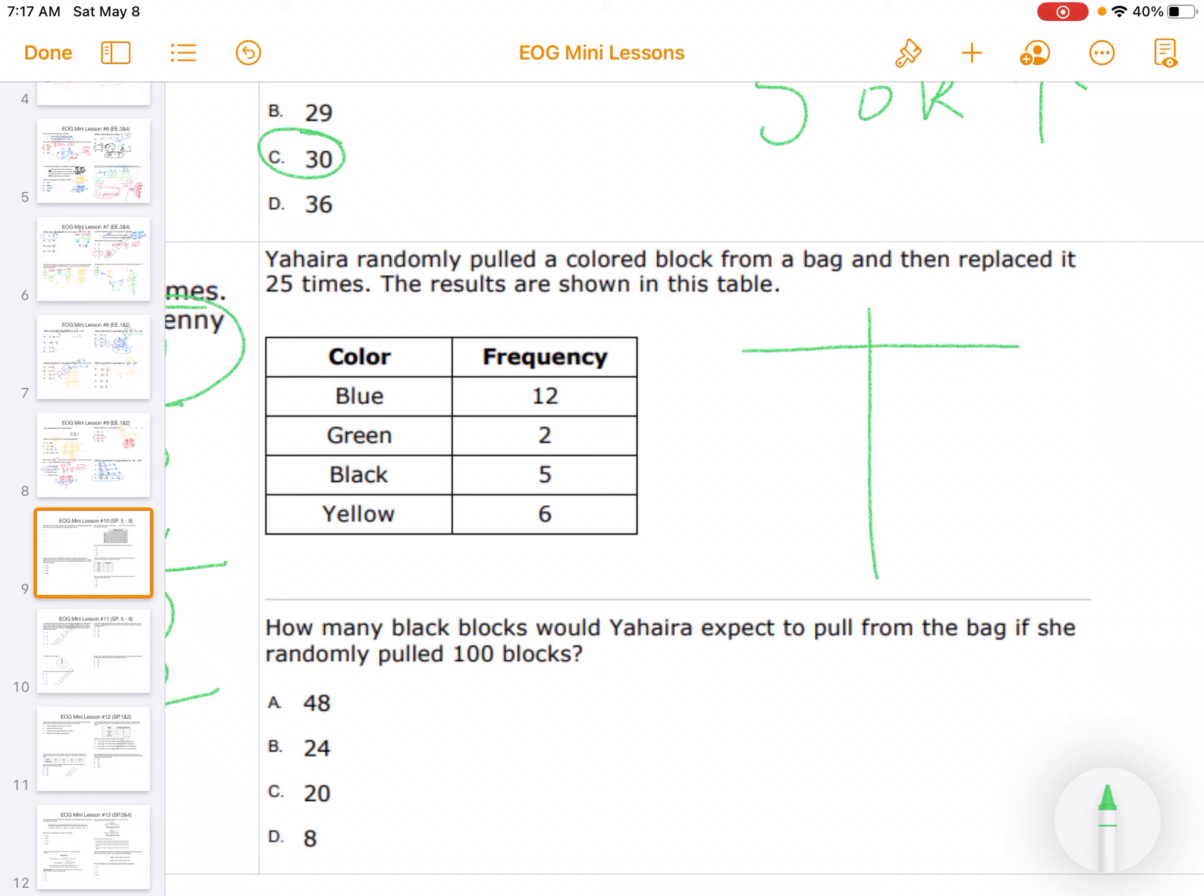Okay, so they want to know black, and I'm comparing that to the total. So I know she got 5 out of 25. So out of 25 tries, she got 5 black blocks. So out of 100... So I divide going up, multiply coming down. 100 divided by 25 is 4. 4 times 5 is 20. So I would expect her to pull out 20 black blocks.